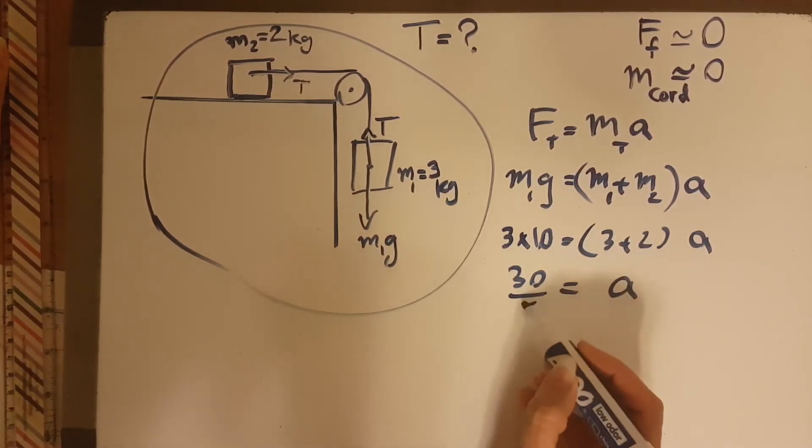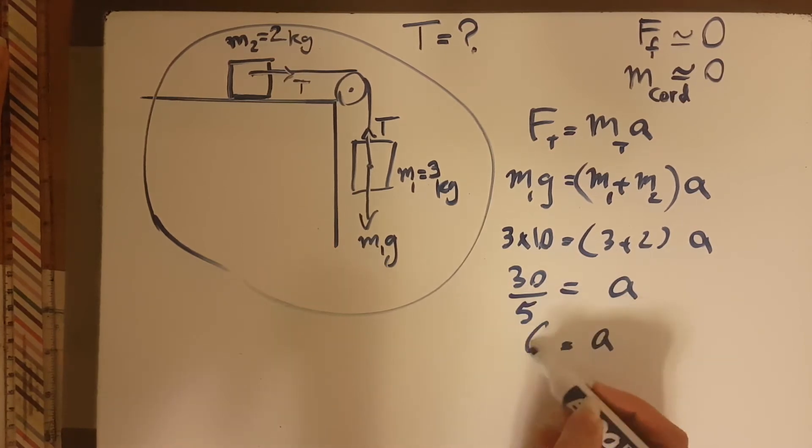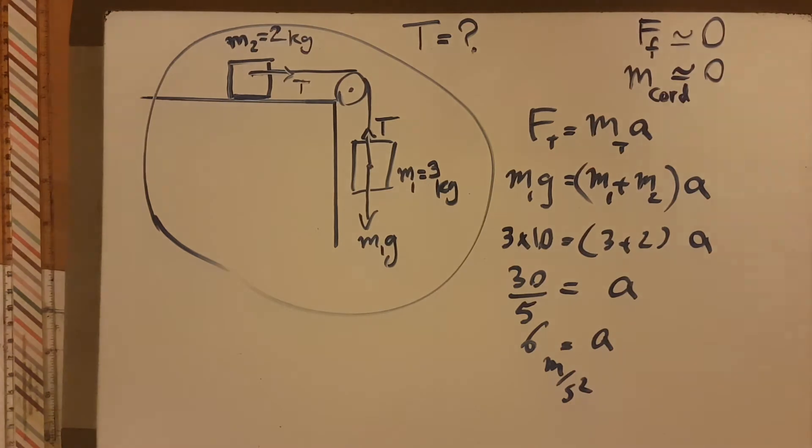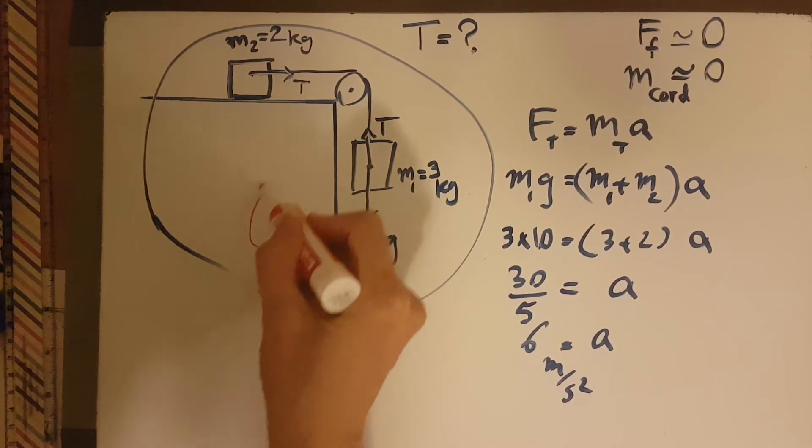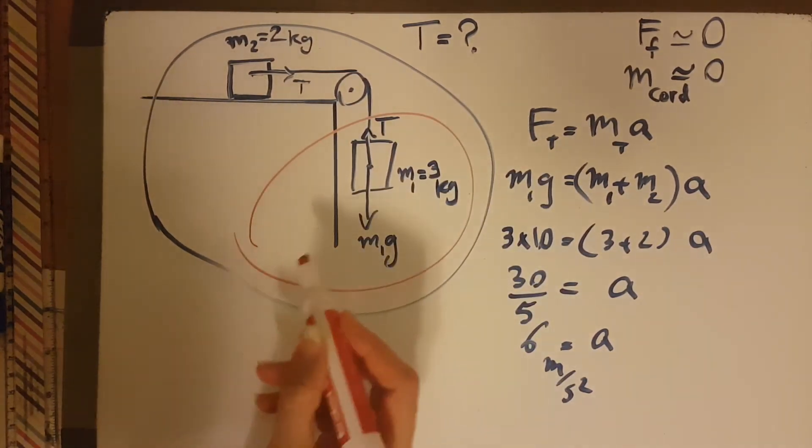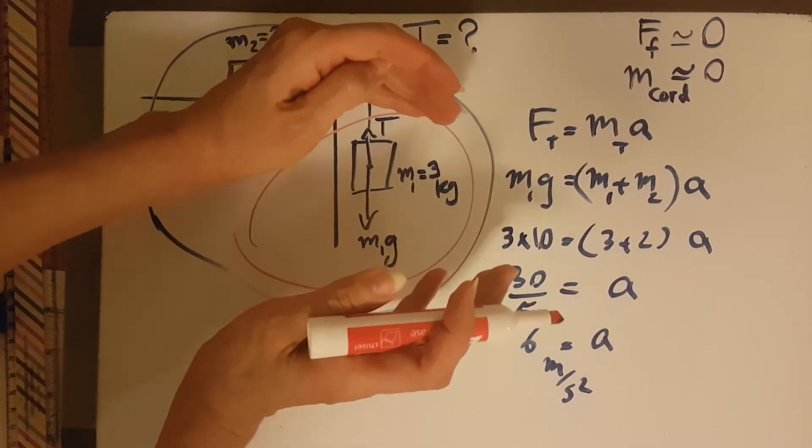So the A would be 6 meters per second squared. Now what I will do is that I draw another circle. I draw this circle here and in here I only consider this part as a system.